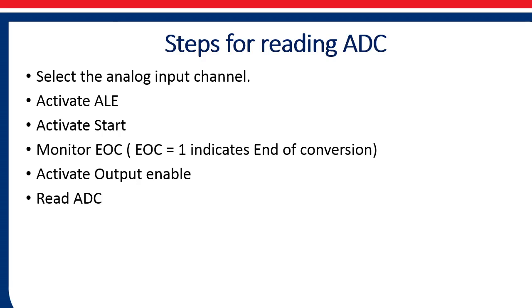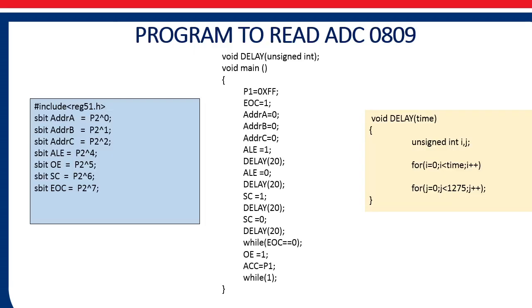The C program for this is divided into 3 parts. One is the delay required for generation of pulses. The second part is where we declare the different port pins — for example, ADDRA is equal to P2.0. Similarly, all the control signals are assigned their names here.